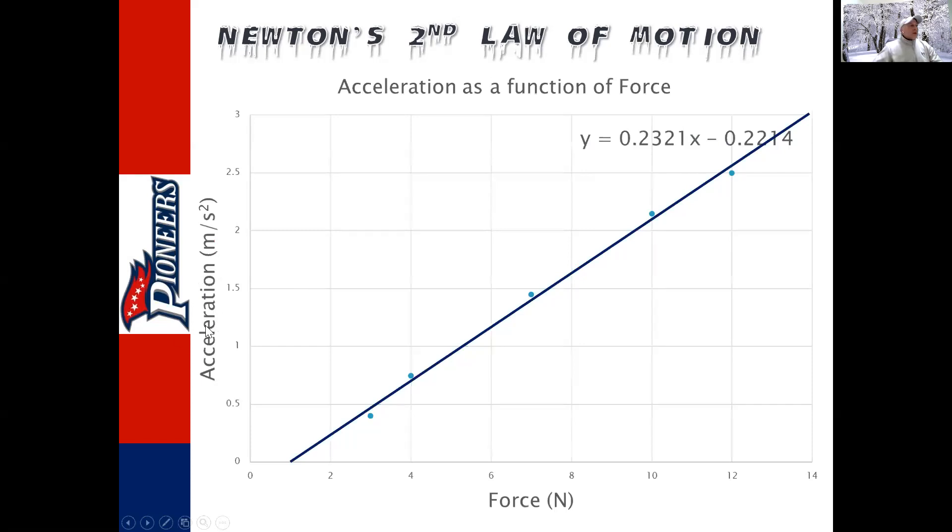Because we know acceleration is dependent upon the force. Dependent variable goes on the y-axis. Independent variable goes down here. Here's my equation. Obviously, the slope is the key, but this is also a key. Well, your graph should look like that. It should be linear. You know, depending on if you're using a Casio or a TI or if you graphed it, what have you.